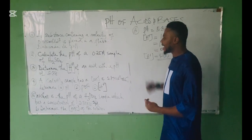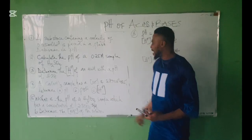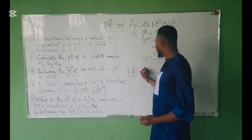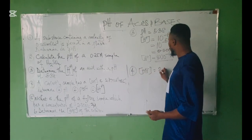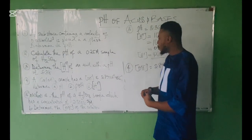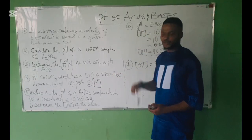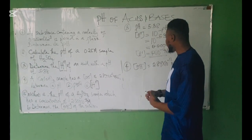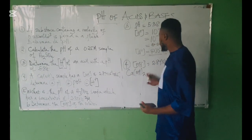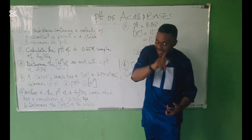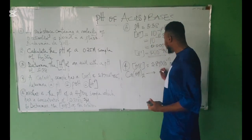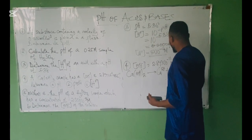Question 4: A calcium hydroxide Ca(OH)₂ sample has a hydroxyl ion concentration of 2.89 × 10⁻¹¹ mol/L. We need to find pOH, pH, and [H⁺]. Ca(OH)₂ dissociates as: Ca(OH)₂ → Ca²⁺ + 2OH⁻. Since there are two OH⁻ ions, the actual [OH⁻] = 2 × 2.89 × 10⁻¹¹.